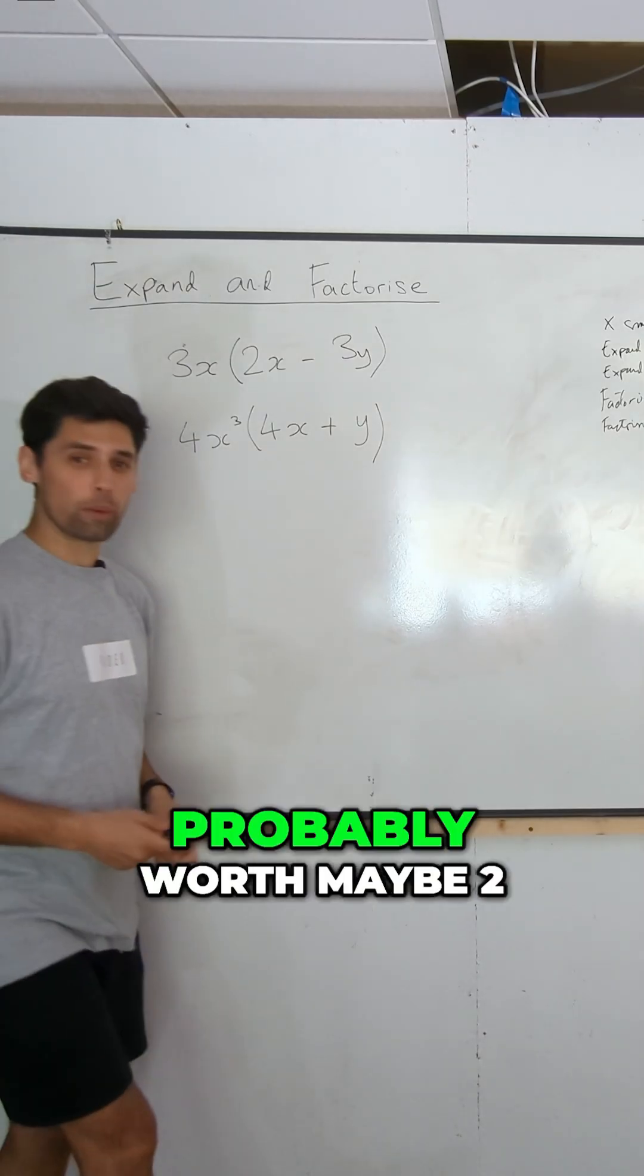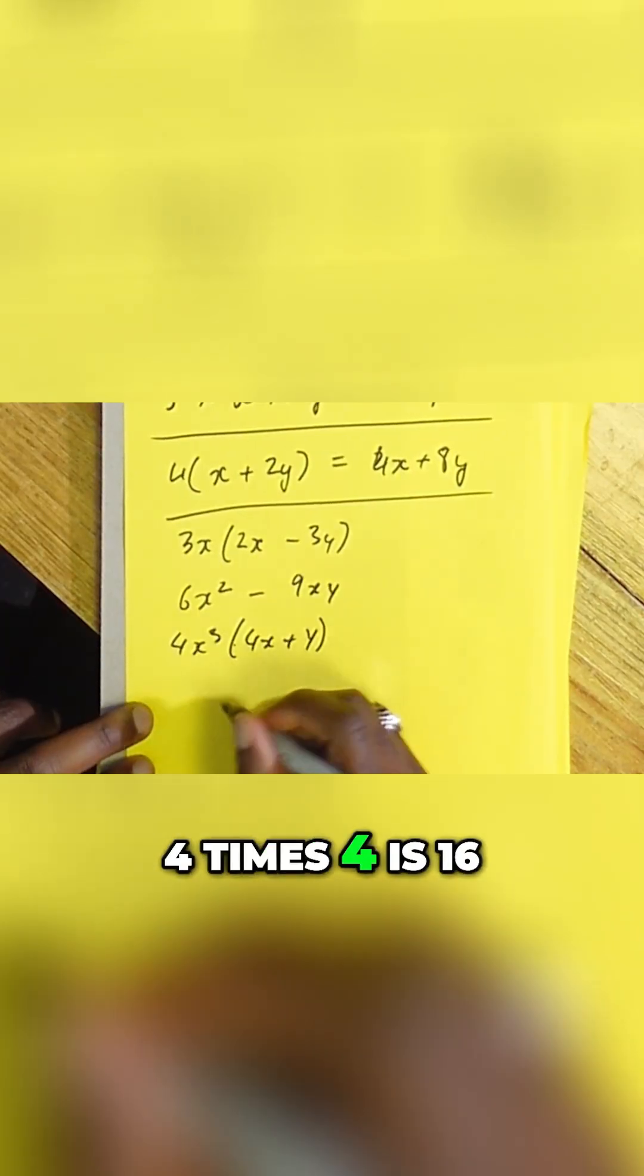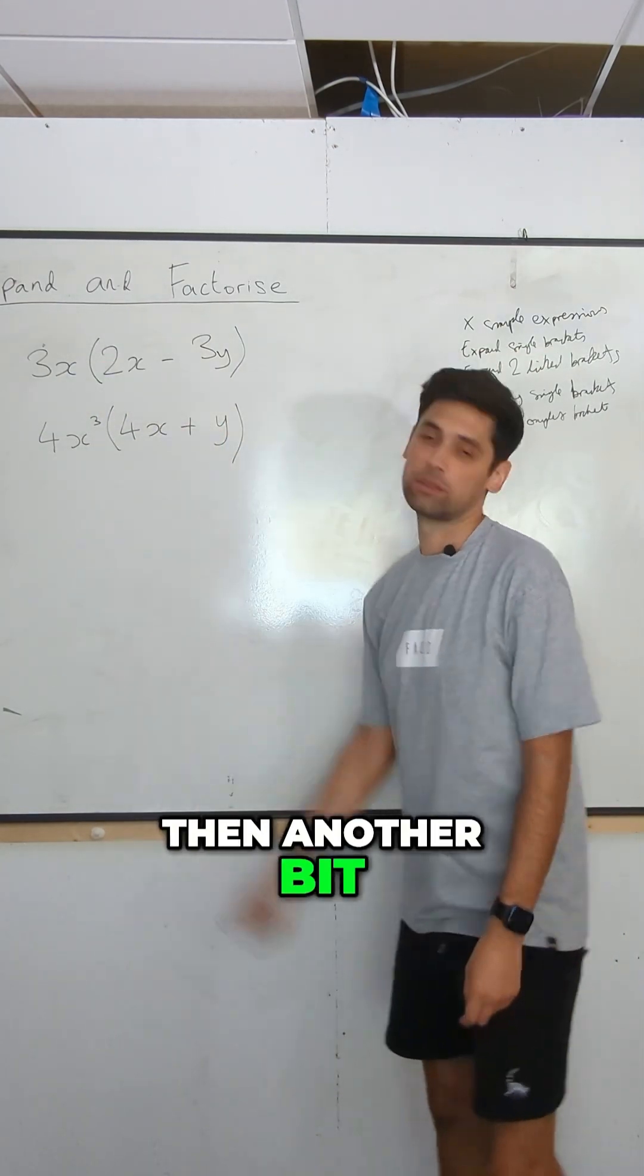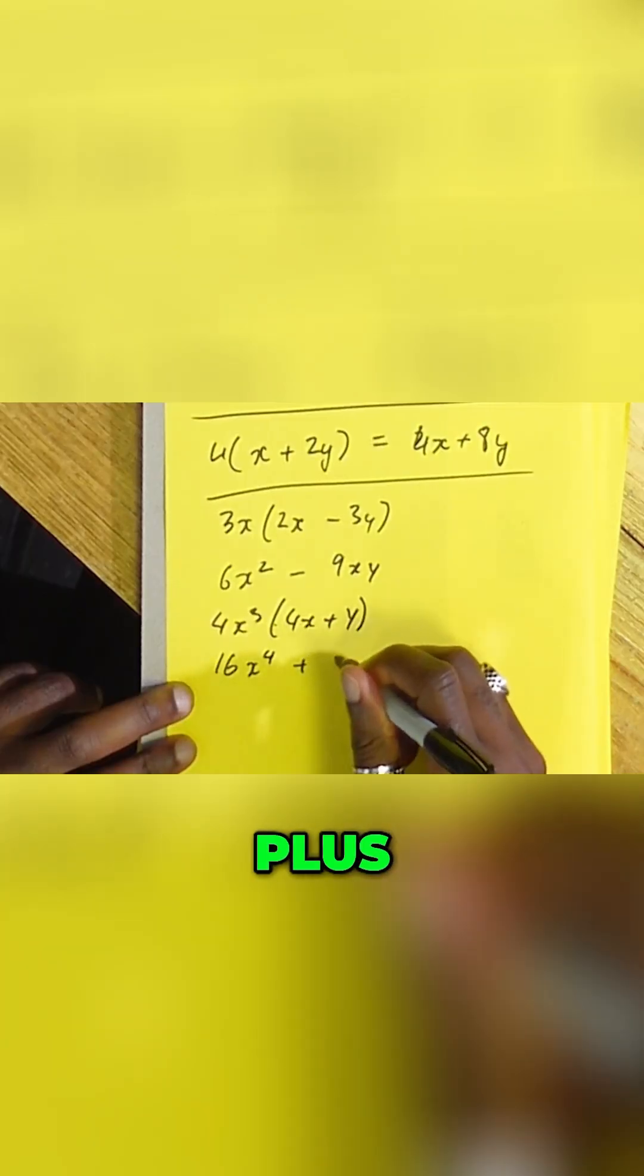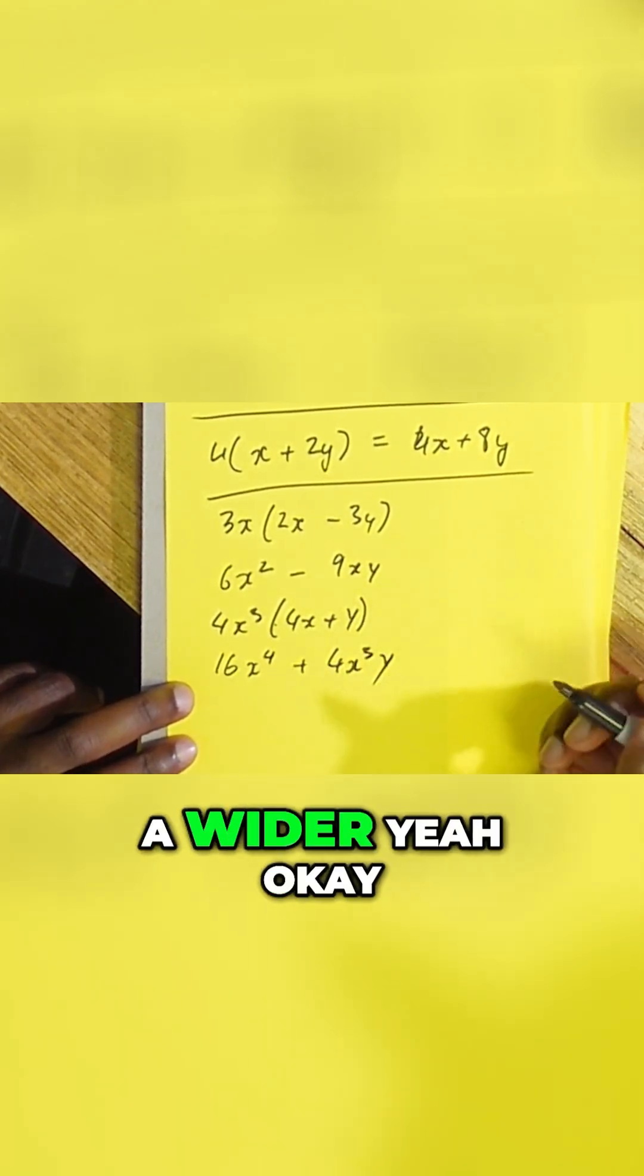These questions individually are probably worth maybe two marks on your paper. 4 times 4 is 16. Even if you get the first bit right, you'll get a mark, then another bit. Another mark for the second bit. Plus 4x to the 3. Just slap a y there. Yes.